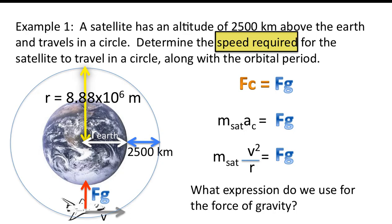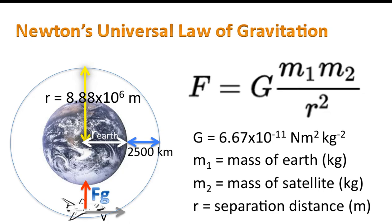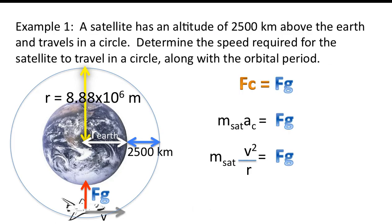So, the question is, what expression do we use for the force of gravity? Well, we use Newton's universal law of gravitation. G is given by this value. It's called the universal gravitation constant. m1 could be the mass of the earth in kilograms. m2 is the mass of the satellite. And r is the separation distance measured between the two centers of the objects. And so, now we'll substitute that expression.